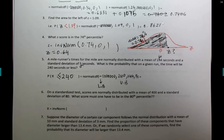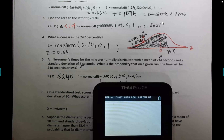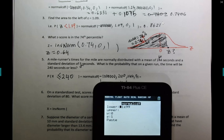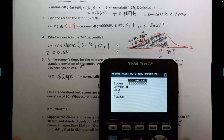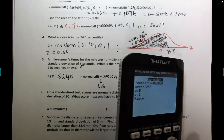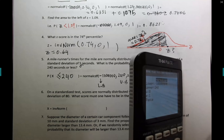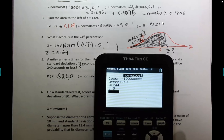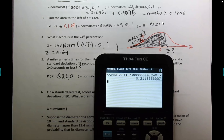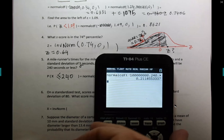Round to four decimal places. Going through the calculator: normalcdf(−1000000, 240, 244, 5). The answer is 0.2119. That answer has been confirmed in the chat.